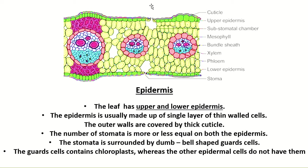The stomata are surrounded by dumbbell-shaped guard cells. The guard cells contain chloroplasts — chloroplast is a cell organelle responsible for the photosynthesis process. Except for the guard cells, other epidermal cells do not possess chloroplasts.